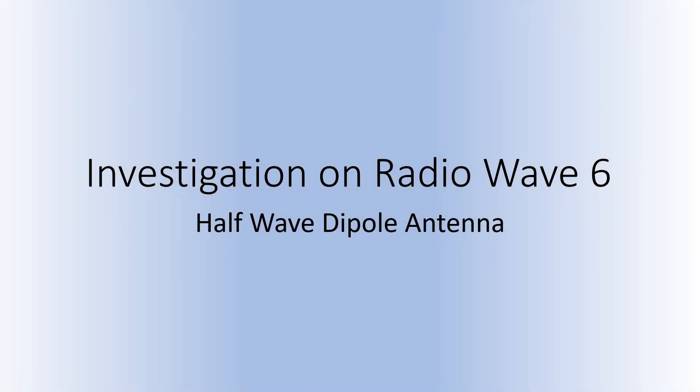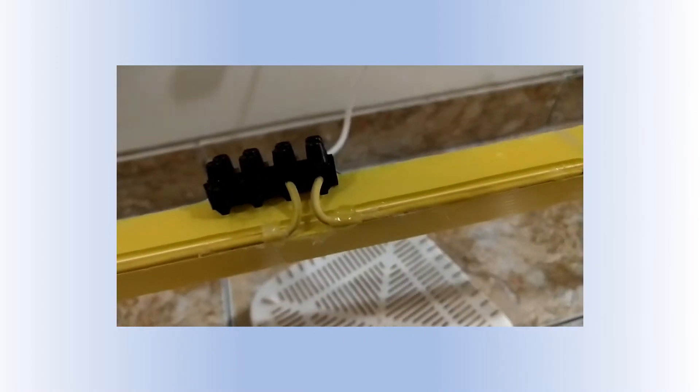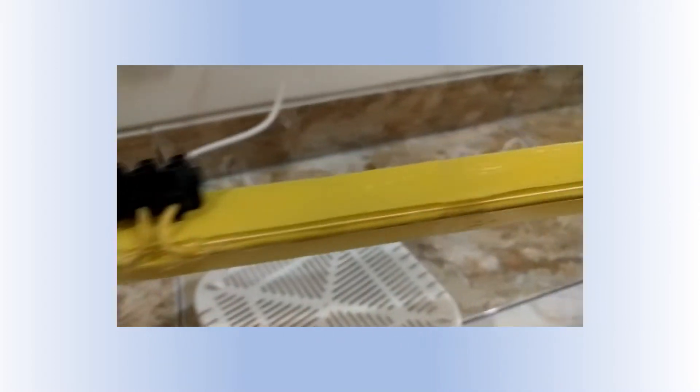In this video we will investigate radio wave transmission from a half wave dipole antenna. The antenna is made from a flexible copper cable. For mechanical support, a folded corrugated board is used.